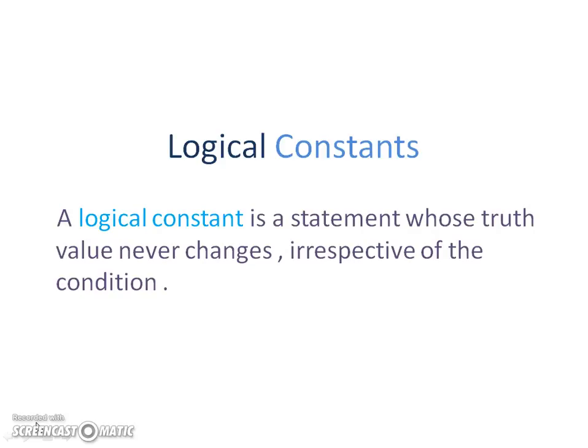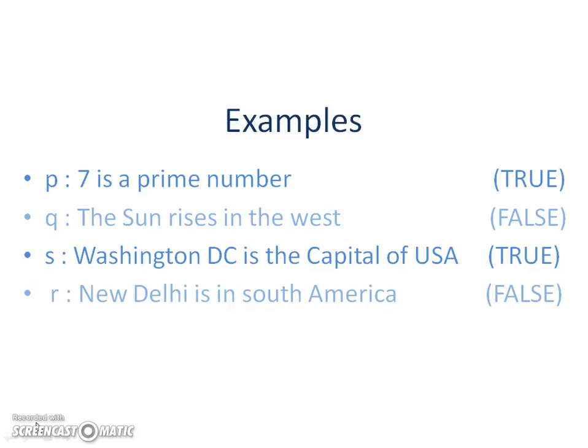Moving forward, these are some of the examples. P, which is a statement, tells us that seven is a prime number, which is true, and it never changes with respect to any situation or consideration.